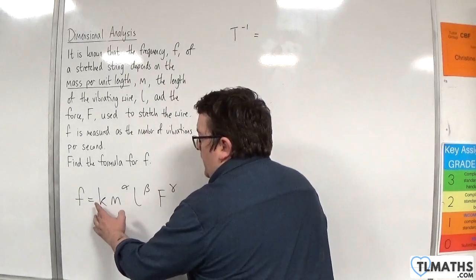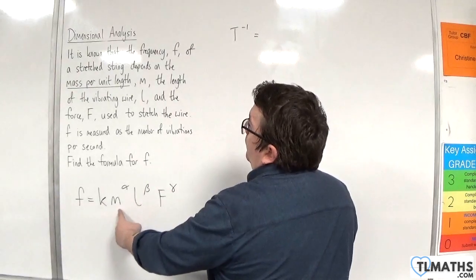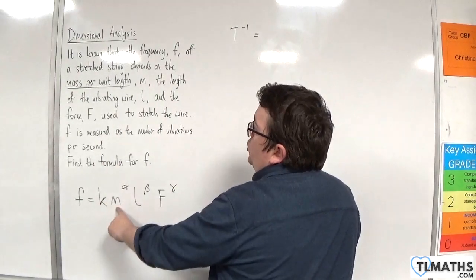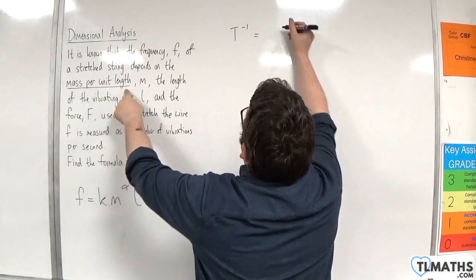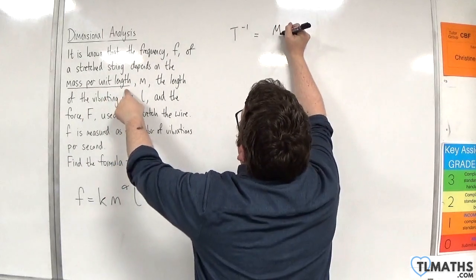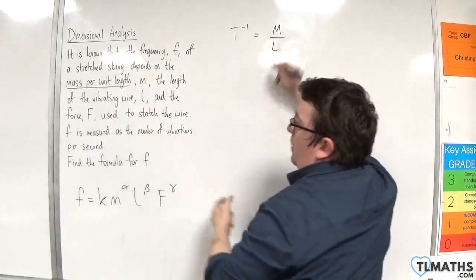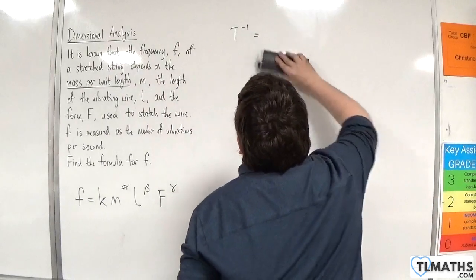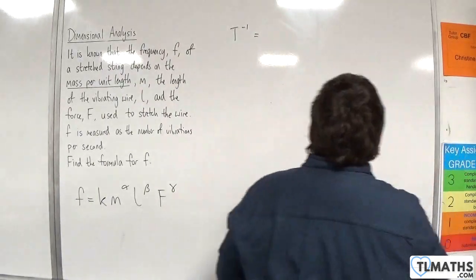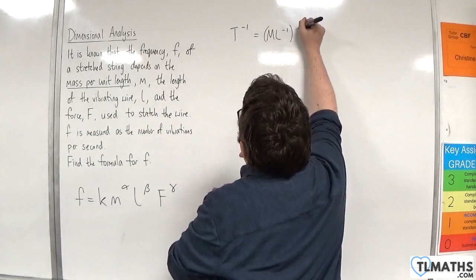The right-hand side, the k can be ignored. It's dimensionless. Now the m doesn't represent just mass. It is mass per unit length. So that is mass over length. Now we could write that as ml to the minus one, and that's to the alpha.